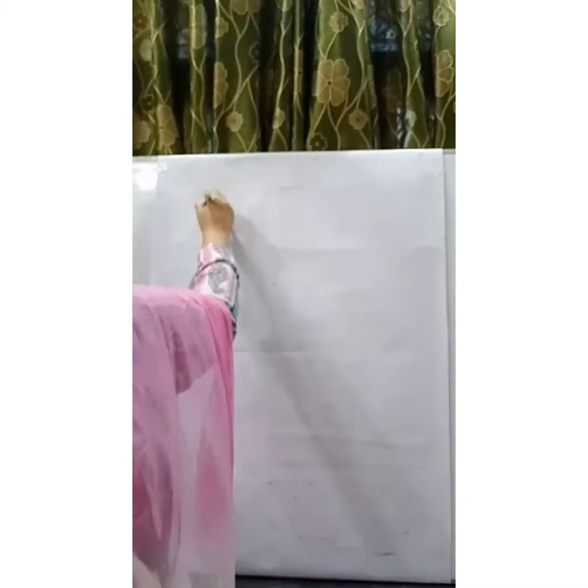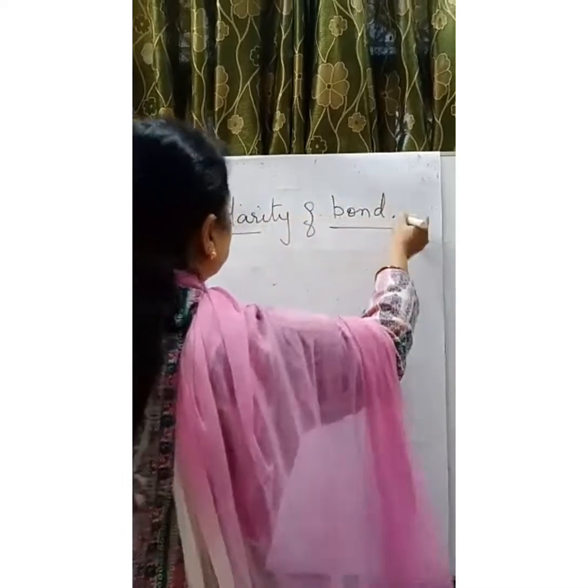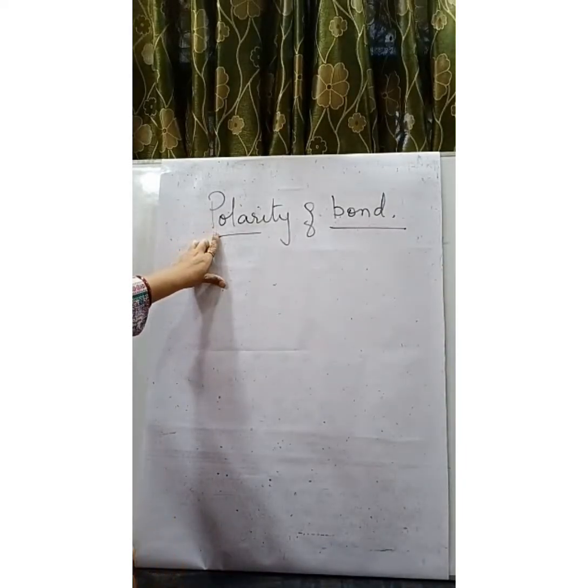It is noticed that there is some ionic character present in covalent bond and there is some covalent character present in ionic bond. When there is a large difference in electronegativity, this is known as ionic character. When the difference in electronegativity is more, the ionic character is more. So basically, the term polarity means difference in electronegativity, and no bond is 100% ionic or 100% covalent.